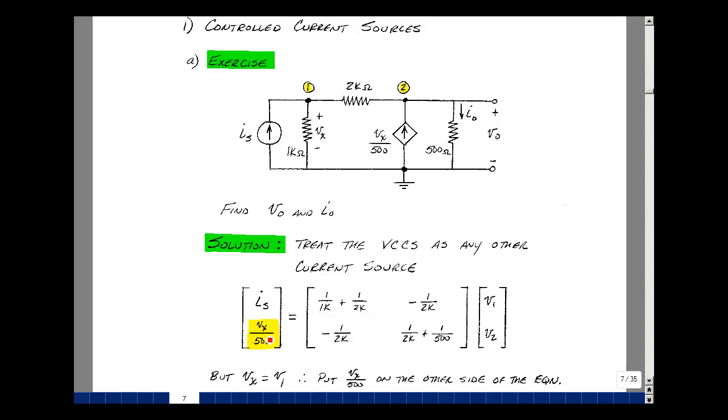It goes on the left-hand side of the equation of the currents entering each node. In node number 1, I've got one current source entering here, I sub s, and my resistances are 1k and 2k. So I'm going to sum their conductances. So the reciprocal of 1k plus 2k goes in row 1, column 1. And between nodes 1 and 2, I have a 2k resistor. So I'm going to subtract the conductance, 1 over 2k.